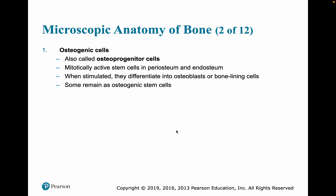Osteogenic cells are also referred to as osteoprogenitor cells or bone stem cells. They are mitotically active stem cells in the periosteum and the endosteum. When stimulated, they go down a differentiation line and become osteoblasts or bone lining cells. When a cell divides, one stem cell remains a stem cell so we don't run out, and the other continues the differentiation pathway.